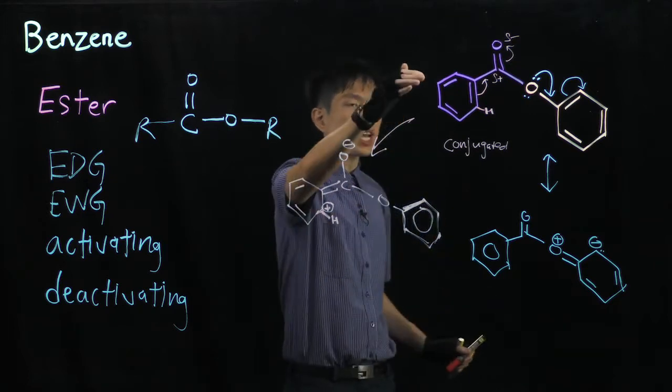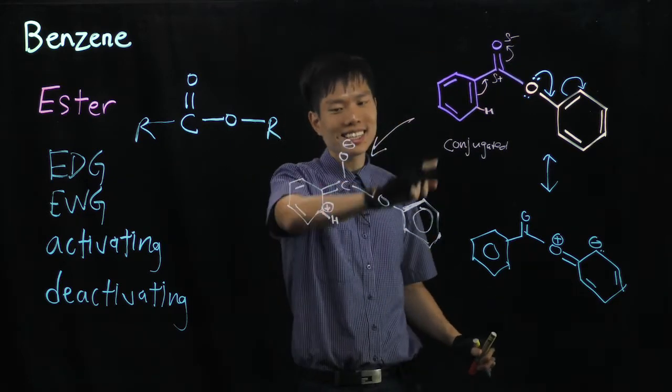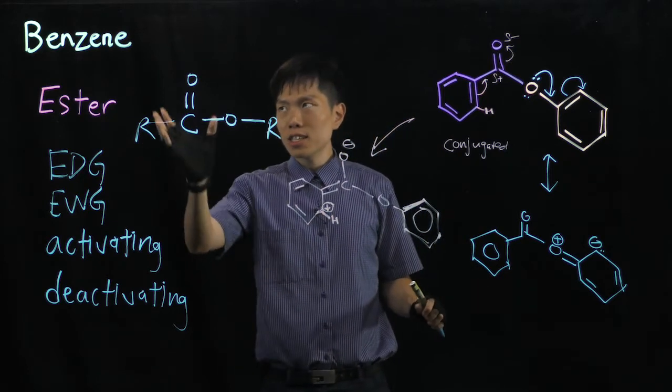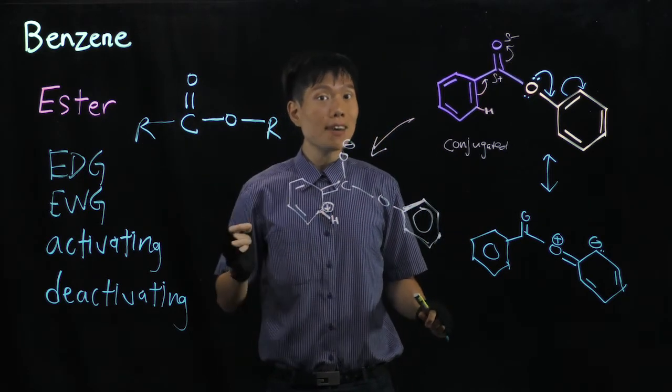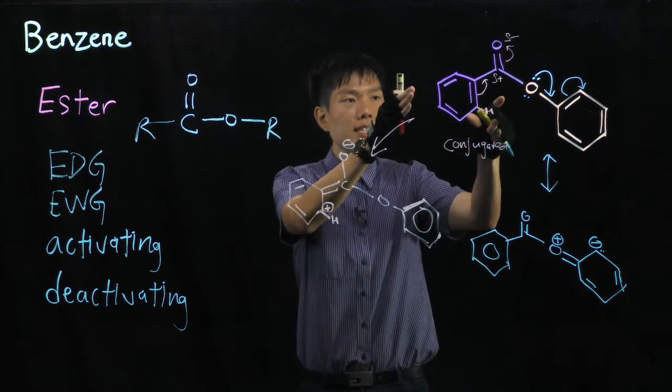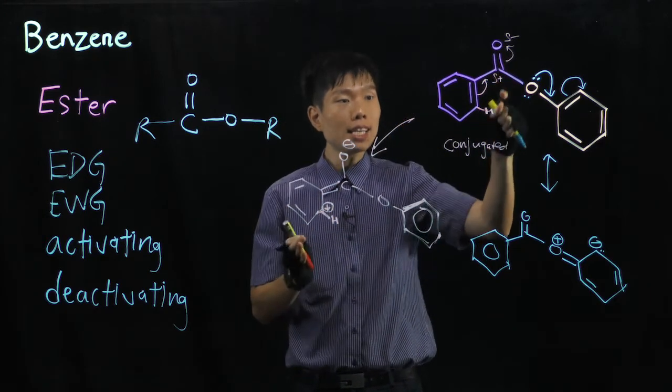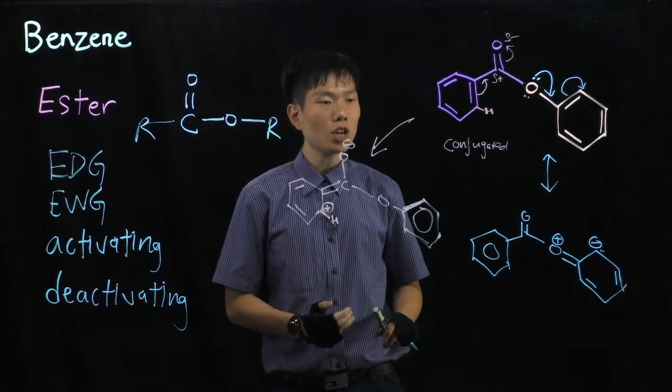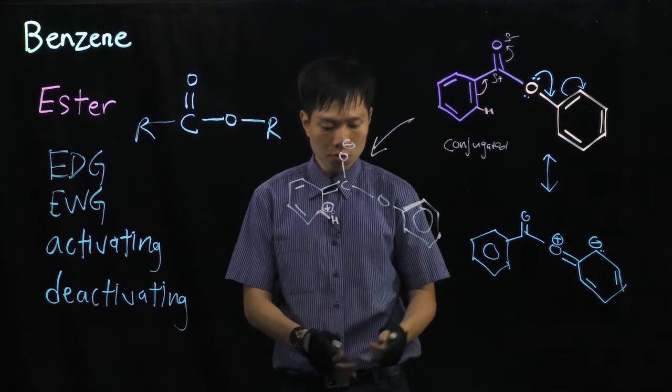So that means an ester next to the benzene ring, you have to be careful which side you're talking about. If the benzene ring is next to the CO double bond side directly, it is being deactivated because it gains a positive charge, electrophile would not prefer to go in.